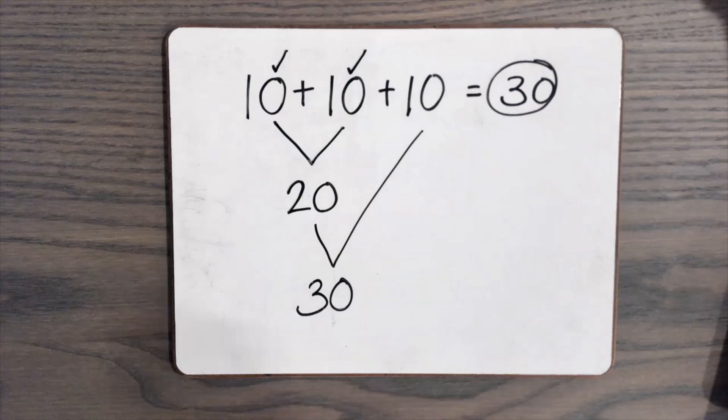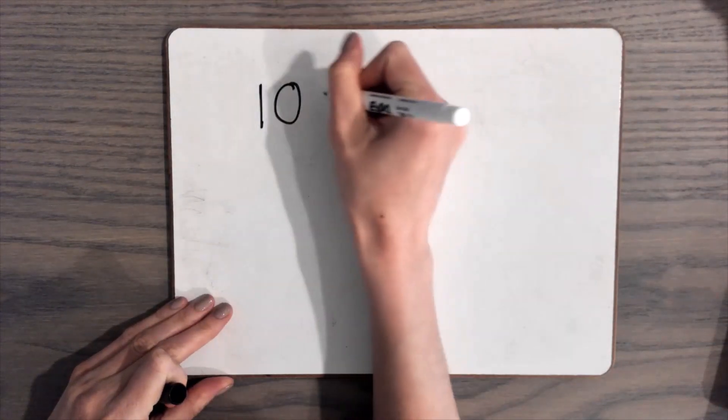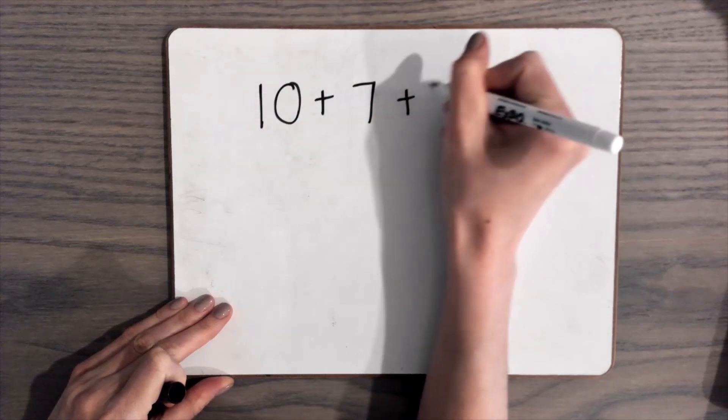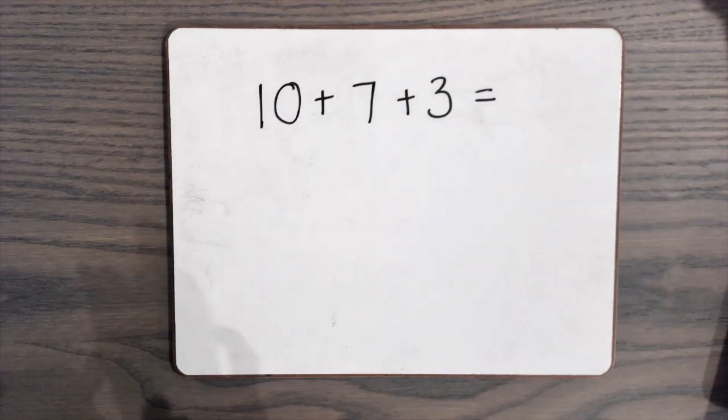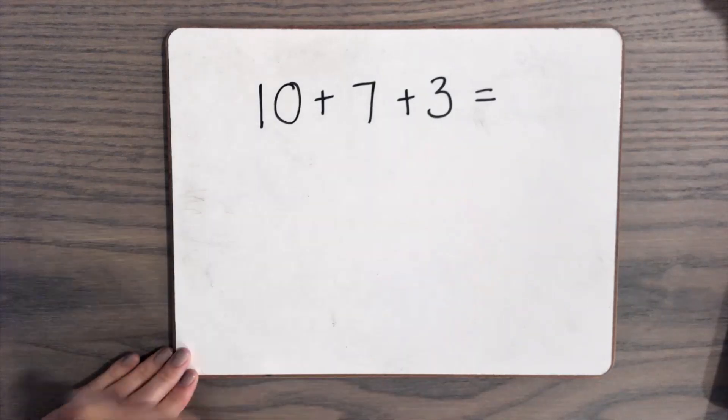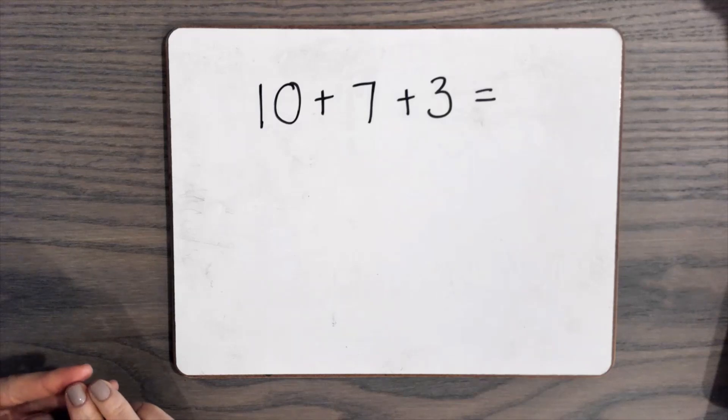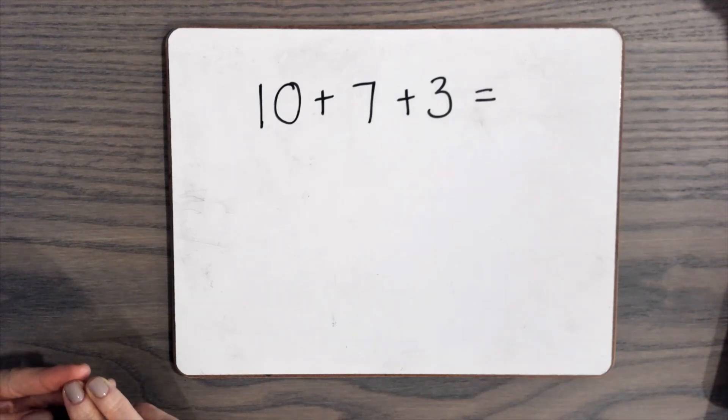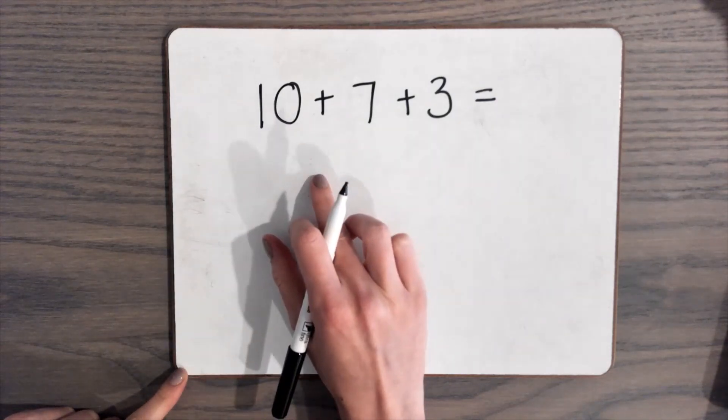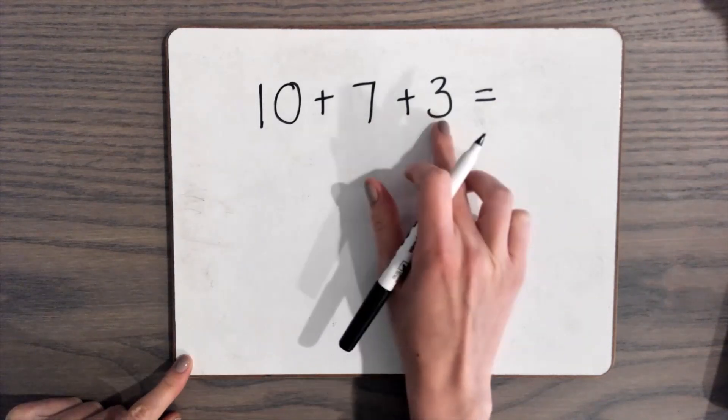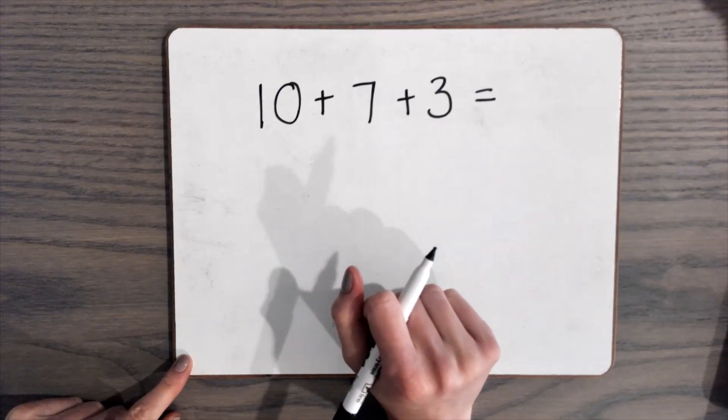Now I'm just going to show you using some different numbers. Another example. So remember when we have multiple numbers, we want to look and see, do we have any doubles? Do we have any combinations of 10 to solve before we start adding our numbers? So I wouldn't start with 10 here.